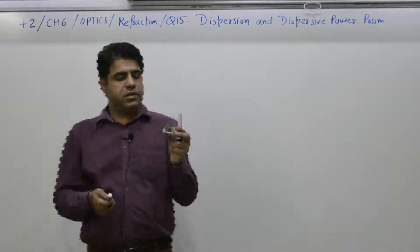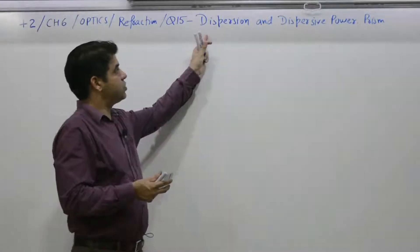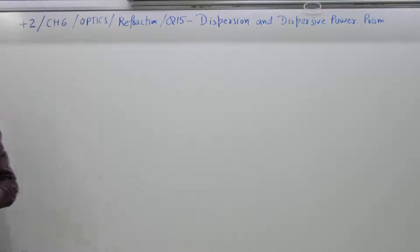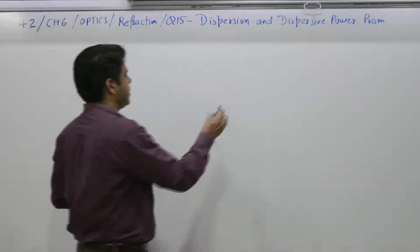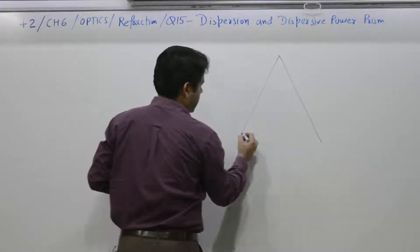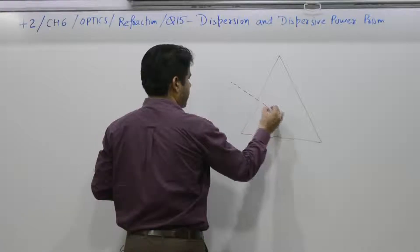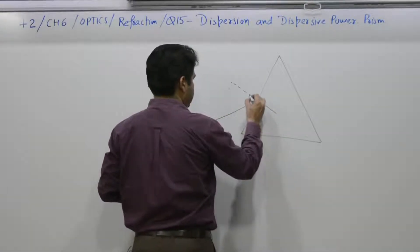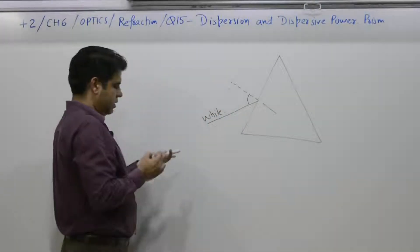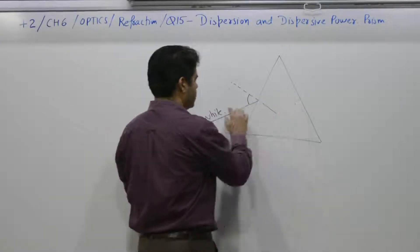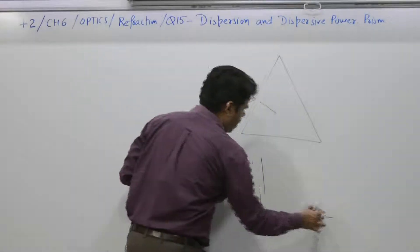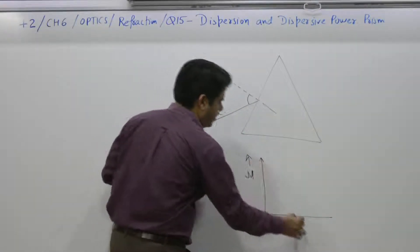Question number 15 deals with dispersion in a prism and dispersive power. When we talk about dispersion and dispersive power, consider a prism with white light incident on it. This white light, because of different values of nu, undergoes dispersion. Nu is different for different wavelengths.